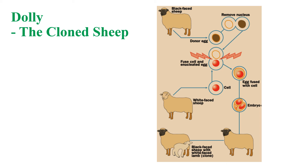Dolly is the first cloned female sheep, created by the somatic cell nuclear transfer technique. Let us see the steps involved in the development of a cloned sheep. First, an egg was collected from a black-faced sheep, then the nucleus was removed from the egg. Simultaneously, a cell was collected from a white-faced sheep. The next step was to fuse the cell with the enucleated egg. The egg fused with the cell is called a zygote. The zygote became an embryo following various cell divisions. This embryo was then implanted into a surrogate mother, which gave birth to Dolly, the cloned sheep.